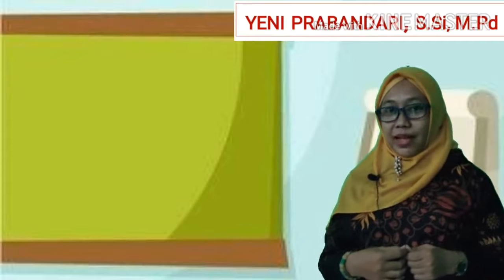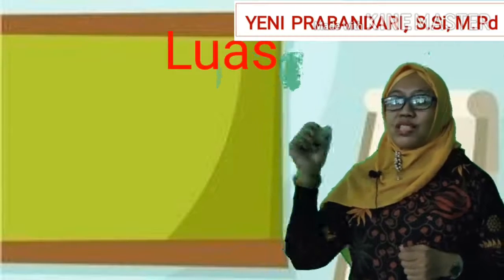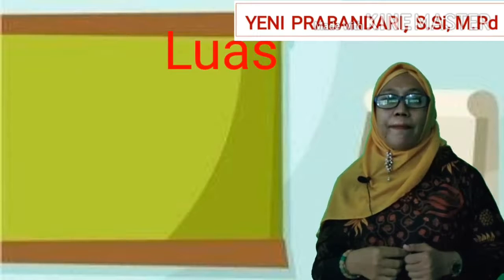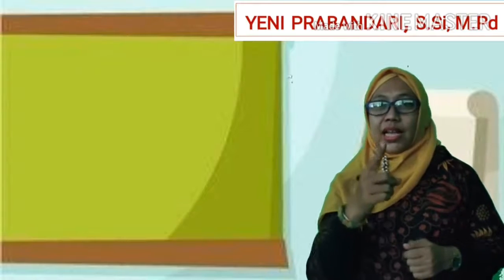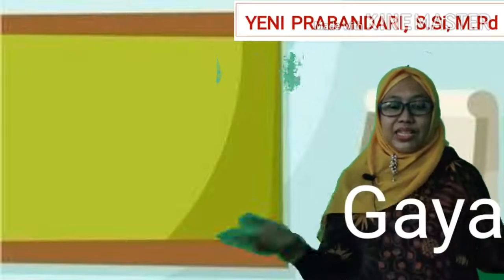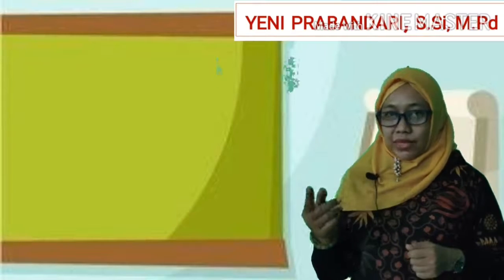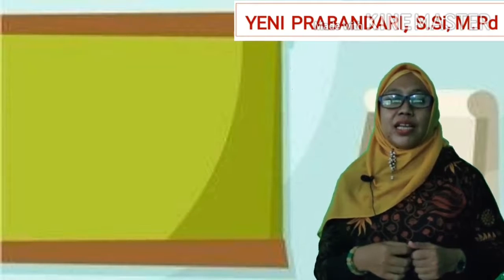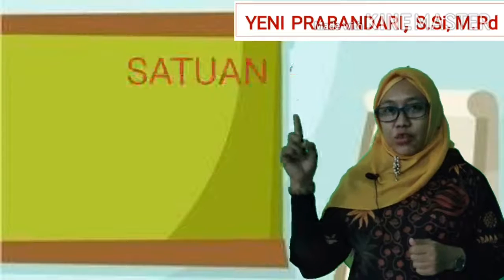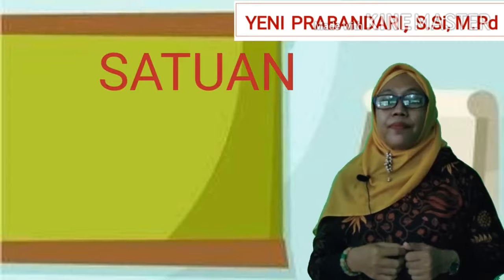Contohnya yaitu luas. Luas diturunkan dari besaran pokok panjang. Lalu ada kecepatan, ada gaya, dan masih banyak lagi contoh dari besaran turunan. Kalau tadi kita sudah bicara besaran, kita akan bicara yang namanya satuan. Satuan adalah pembanding dalam suatu besaran.